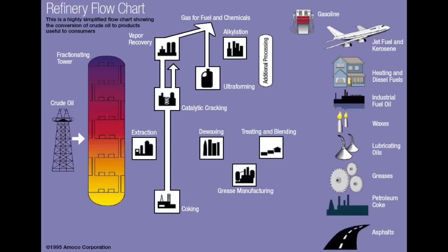Let's follow what happens to different distillation fractions coming from the distillation column. First, the vapor product from the top is sent to the vapor recovery unit and separated into gasoline and LPG — that's liquefied petroleum gas.